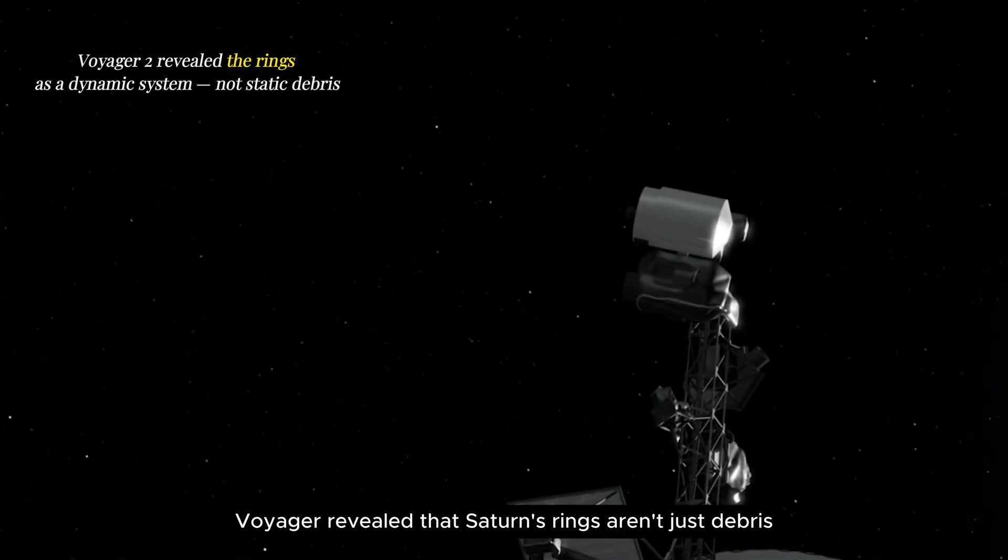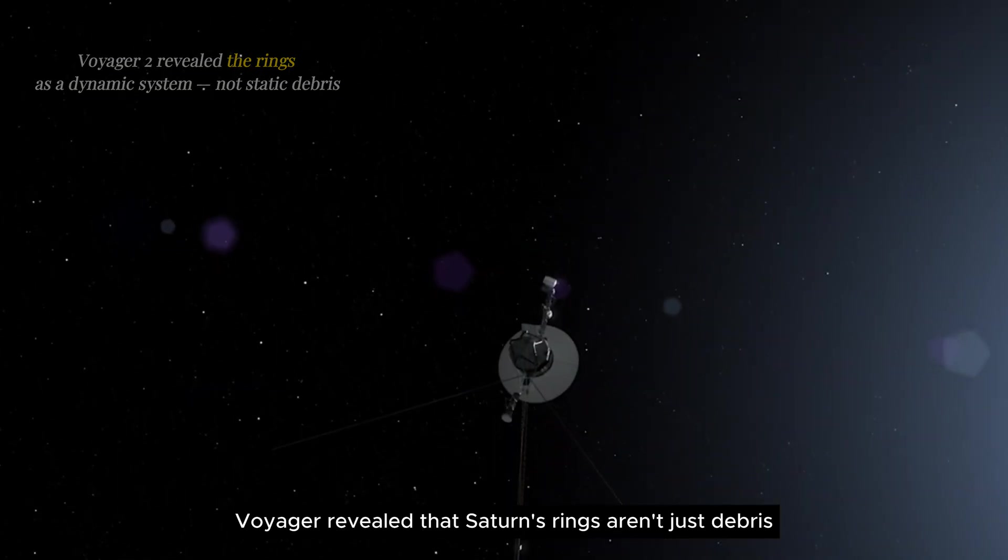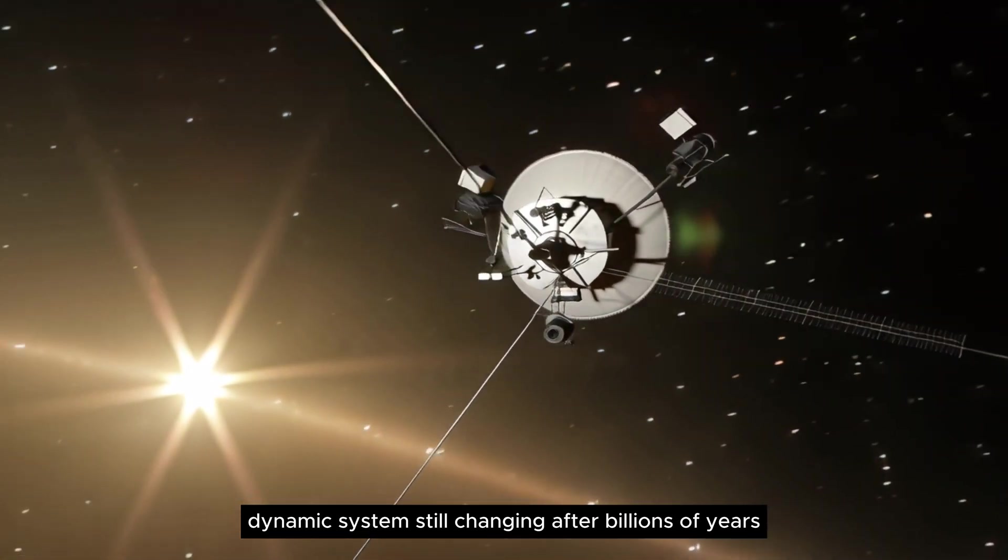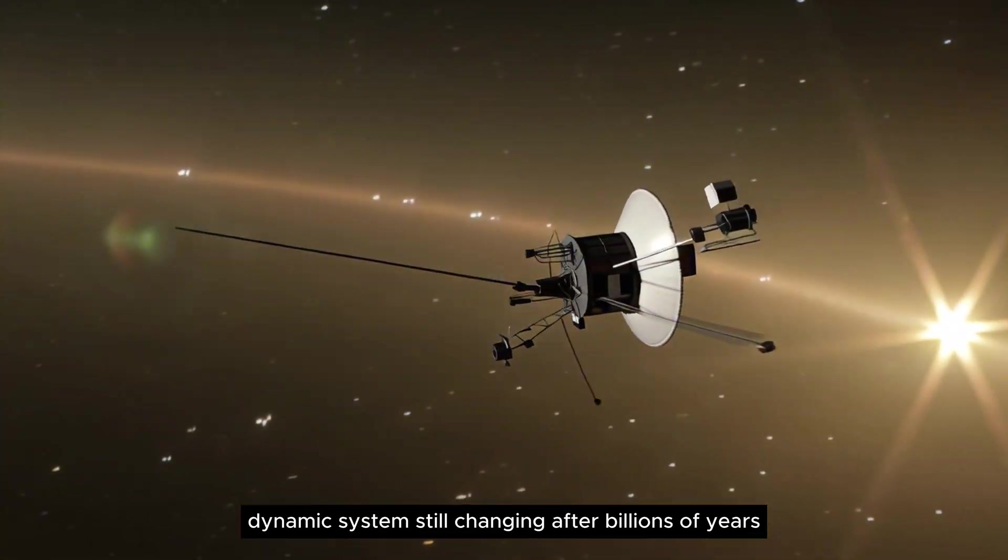Voyager revealed that Saturn's rings aren't just debris. They're a living, dynamic system, still changing after billions of years.